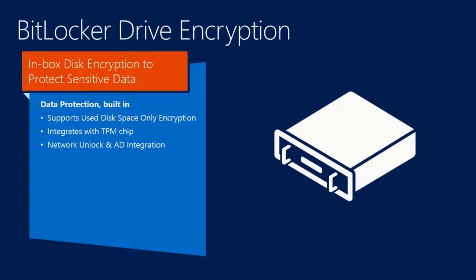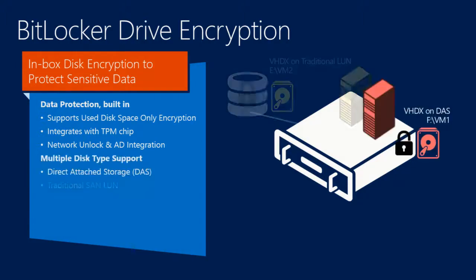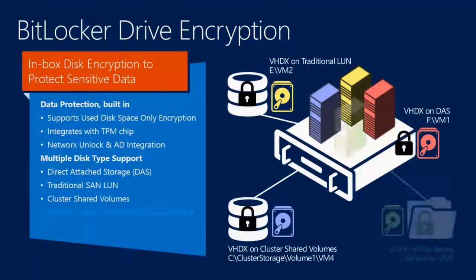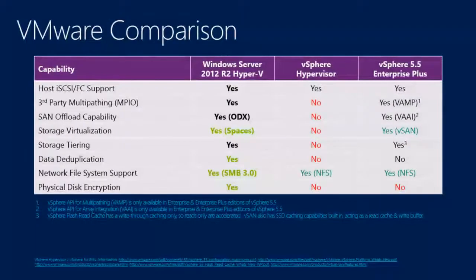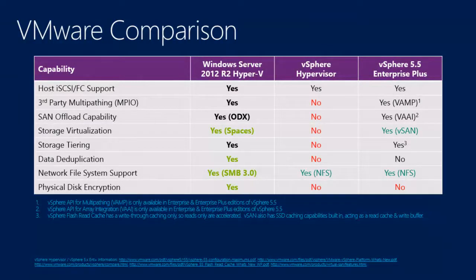BitLocker supports traditional SANs, cluster shared volumes, and the scale-out file server. It's not something extra you have to buy — it's all part of the platform. Comparing features: from a storage standpoint, we include host iSCSI and fiber channel, third-party multipathing, storage virtualization, storage tiering, data deduplication, SMB3, and physical disk encryption — all included in the box. With VMware you have to buy Enterprise or Enterprise Plus editions to get these types of features.